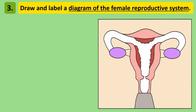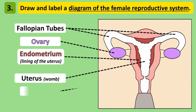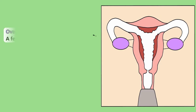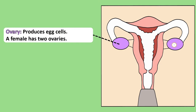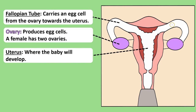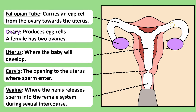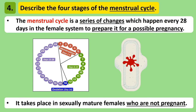This is a diagram of the female reproductive system. You also need to know how to draw this diagram and add the following labels: the fallopian tubes, ovary, endometrium, uterus, cervix and vagina. The ovary is the female equivalent of the testes; females have two ovaries and it's where egg cells are produced. An egg cell moves from an ovary into a fallopian tube, and the uterus is where a baby will develop if a pregnancy occurs. The vagina is where sperm are released into the female system, and the cervix is the narrow opening where sperm gain entry to the uterus. The endometrium plays an important part in the menstrual cycle.